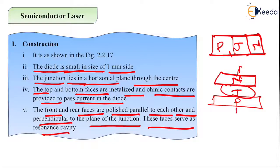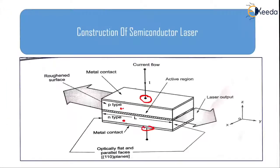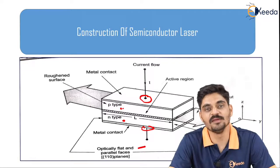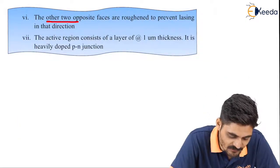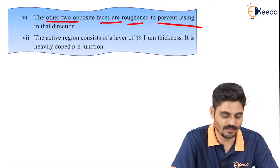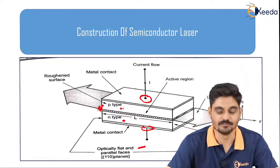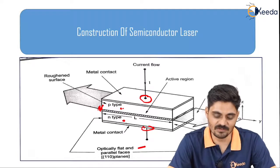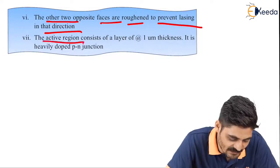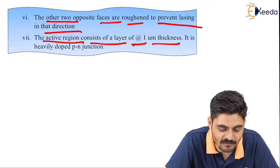The top and bottom surfaces have metallic contacts to provide electrical connections, as shown in the diagram. The front and rear faces are optically flat and parallel, used for lasing in the P and N-type substrates. The other two opposite faces are roughened to prevent lasing in that direction and to prevent leakage of laser light. The active region consists of one micrometer thickness.